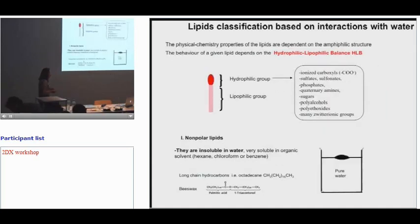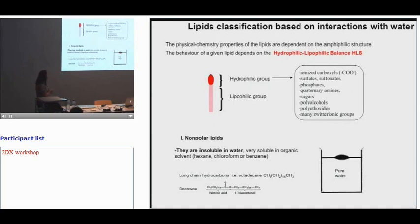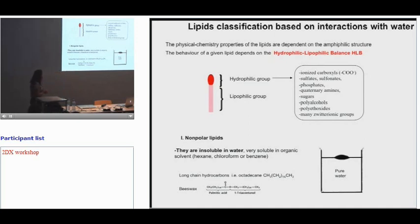One very interesting characteristic of lipids is that some are extremely or partially soluble in water, but others are totally insoluble in water. This is due to the fact that lipids are amphiphilic structures. There is a hydrophilic group and a lipophilic group. The hydrophilic group can be made of polar compounds, sugars, or zwitterionic groups. The lipophilic group is usually acyl chains. The behavior of lipids in water is mainly due to this hydrophilic-lipophilic balance, or HLB.